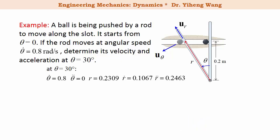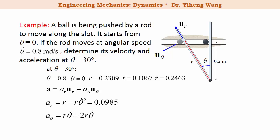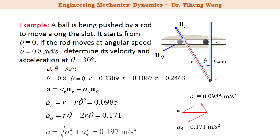Similarly, for acceleration, which also has two components, a_r and a_theta, a_r is evaluated using its equation, and a_theta is evaluated using its equation. The acceleration is represented as a vector showing both components, and the magnitude of the acceleration is calculated to be 0.197 meters per second squared. And that solves this problem.